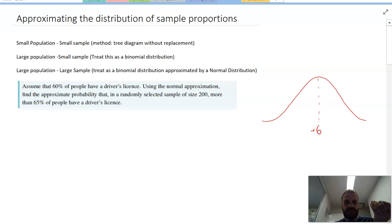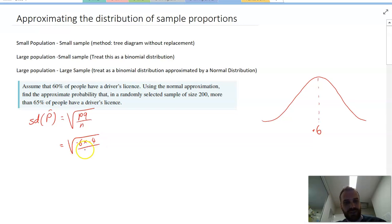Now, what about the standard deviation of the sample proportion? Well, the standard deviation of the sample proportion is going to be equal to the square root of pq over n, where p is the proportion in the population, q is 1 minus that, and n is the number of people in our sample. So that's going to be equal to the square root of 0.6 times 0.4 over n, which is 200. And that is going to give us our standard deviation. And here is our standard deviation here of 0.0346.